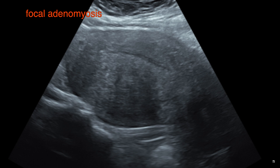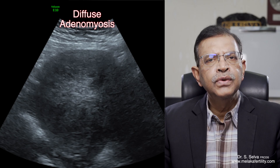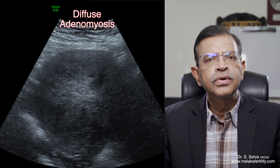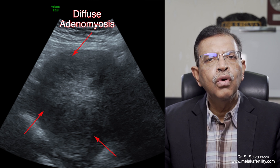This is an ultrasound picture of a focal adenomyosis. There is a bulge and some changes in the posterior wall of the uterus. There is no clear demarcation of the adenomyotic nodule, and other parts of the uterus are normal. This is diffuse adenomyosis — the uterus is enlarged and the adenomyotic lesion is found all over the uterine wall.